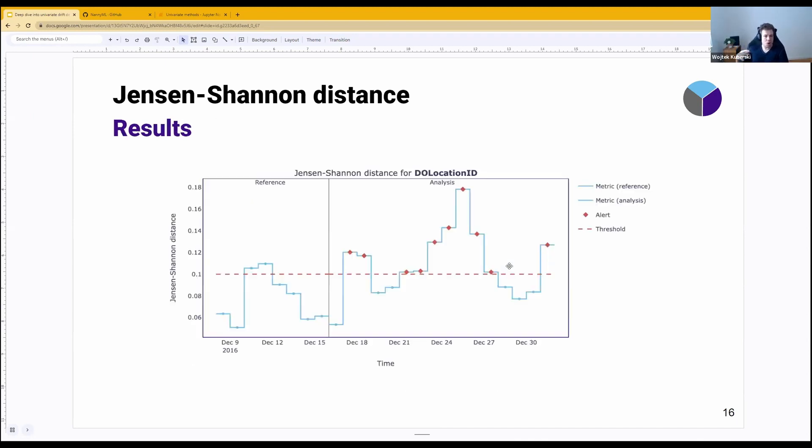And now results. Results will always be quite similar. So let me walk you through how to read the graph once, and then we're going to read it the same way for every other method. What we see on the left is our reference period for which we would not expect any strong drifts. If we actually observe some kind of drifts here, then we should be a bit worried if we see the same drift magnitude in our analysis period, because it might be a false positive. On the x-axis is the time progression.